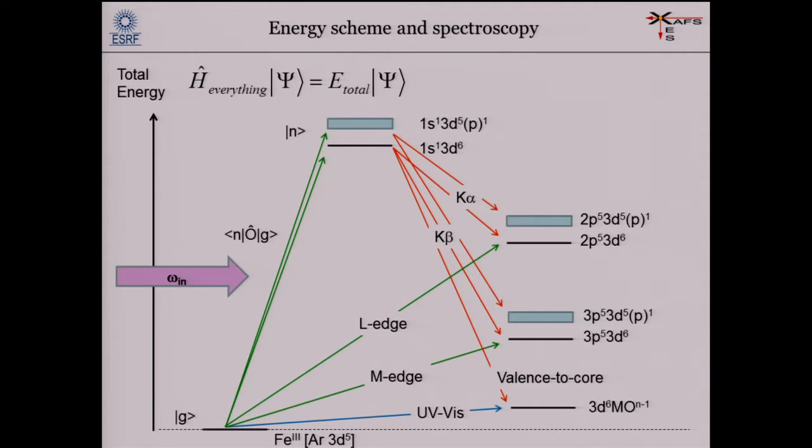What is important about this is that it's a total energy diagram considering all multi-electron effects in principle. The states are multi-electron states and we consider all electrons of the system. It observes energy conservation. And what is nice about a multi-electron total energy diagram: I can put all my spectroscopies in one diagram — UV-Vis spectroscopy and hard X-ray spectroscopies together.